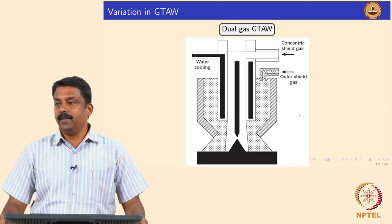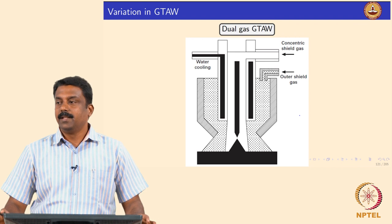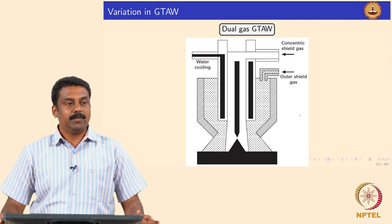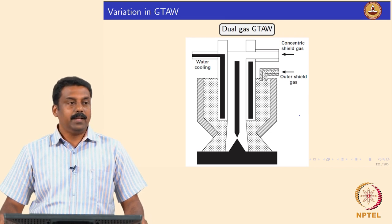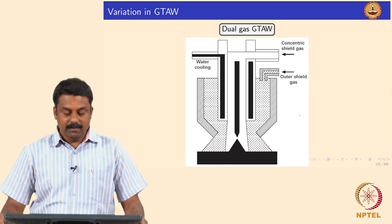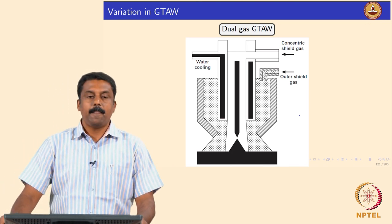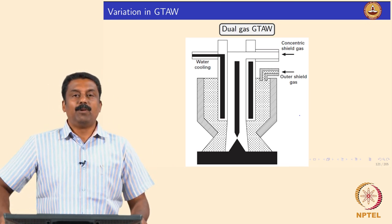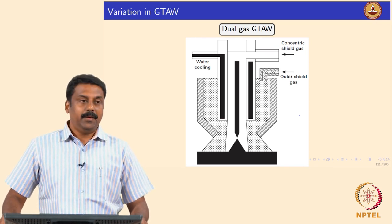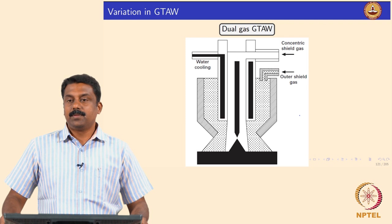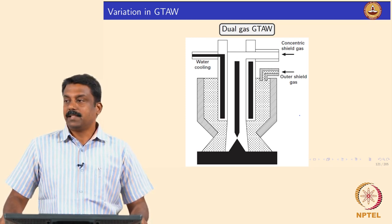We will move on to another modification. So we looked at pulsed square wave DC, variable polarity DC, and then in the last case cold and hot wire GTAW. Now we will move on to another interesting modification we have done to GTAW, which is commercially used extensively: plasma.